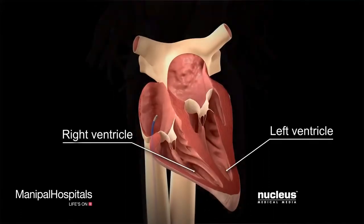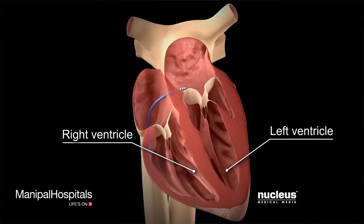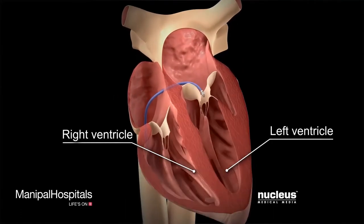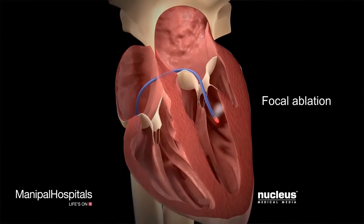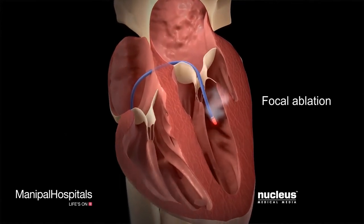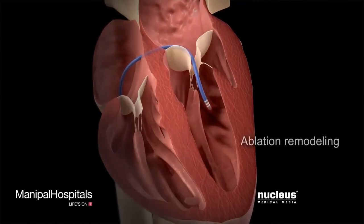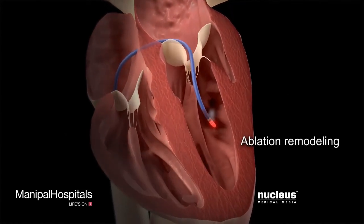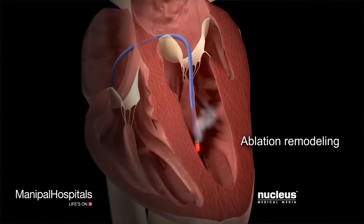If the cause of the arrhythmia is in the ventricle, the doctor can do either focal ablation or ablation remodeling to treat more complex arrhythmias of the ventricle.